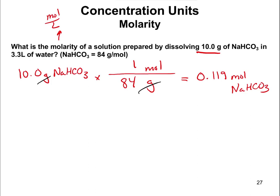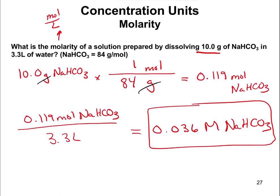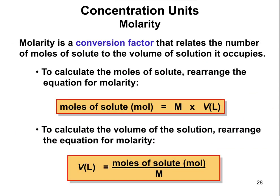To finish the problem, molarity is moles per liter. We have 0.119 moles of sodium bicarbonate, and the problem gave us a volume in liters this time, so no extra conversion is necessary. 0.119 moles divided by 3.3 liters = 0.036 M NaHCO₃. We use two significant figures because of the volume value. Molarity is moles per liter.